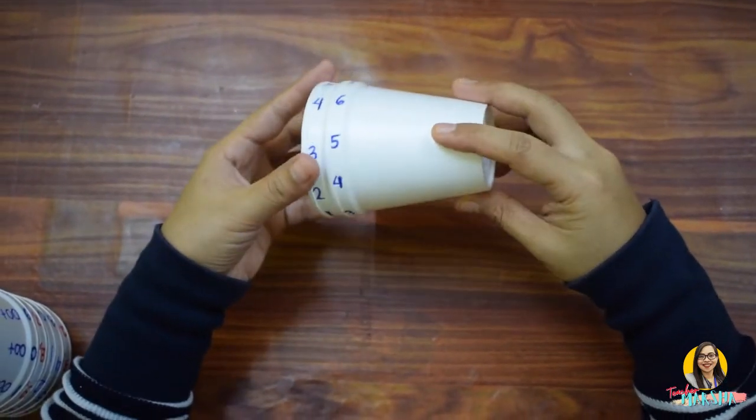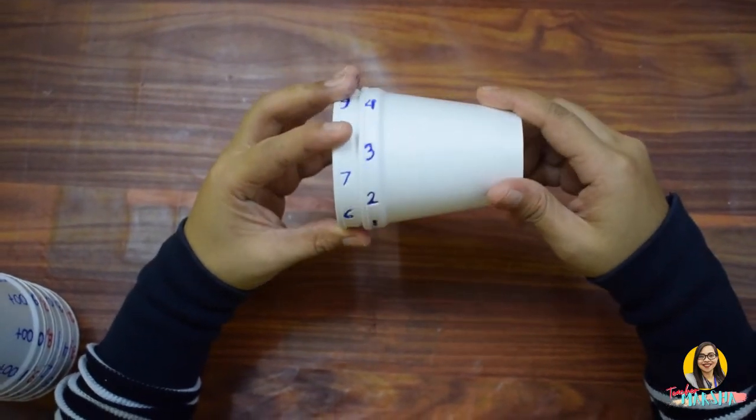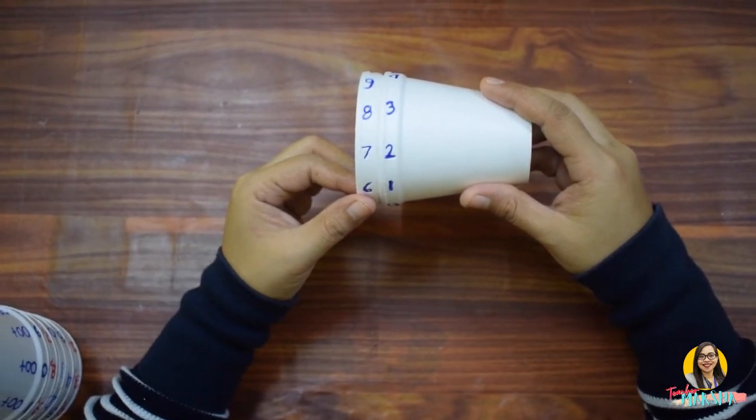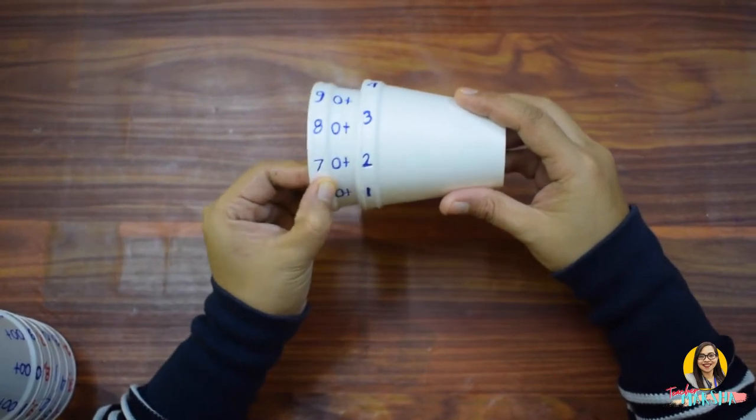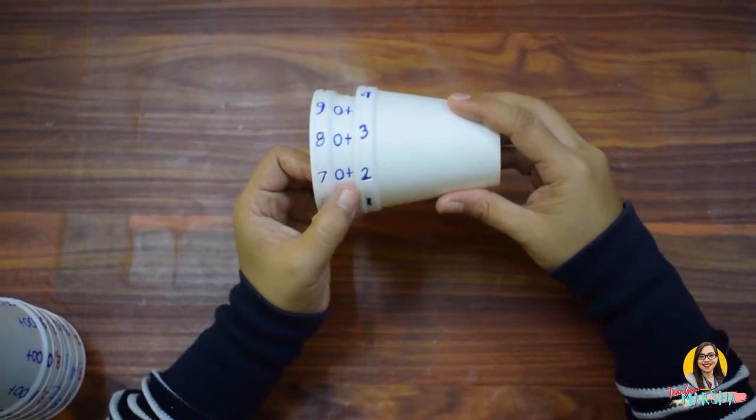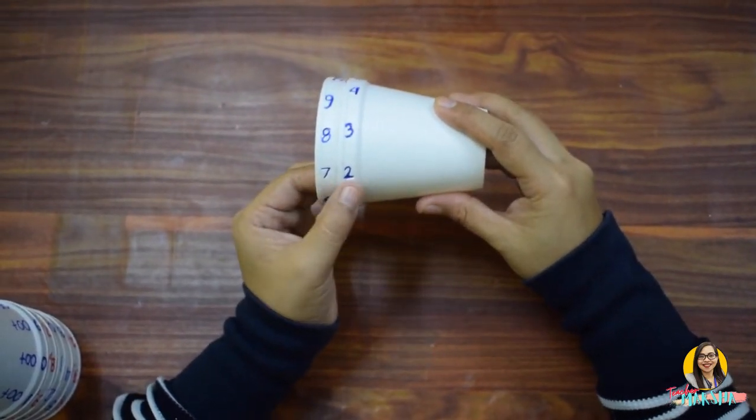First, you need to rotate the cups and select a pair of numbers. For example, 7 and 2. Show your student or your child the value of each digit. For example, the value of 7 is 70 while the value of 2 is 2. 70 plus 2 is 72. So, you read this number as 72.